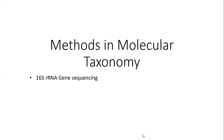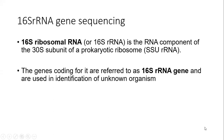Hello, students. In today's class, we are going to learn about 16S rRNA gene sequencing as a method in molecular taxonomy. 16S rRNA is an important component of the 30S ribosomal subunit of the prokaryotic ribosomes, and 16S rRNA gene sequencing is an important technique that is used for identification of unknown organisms.